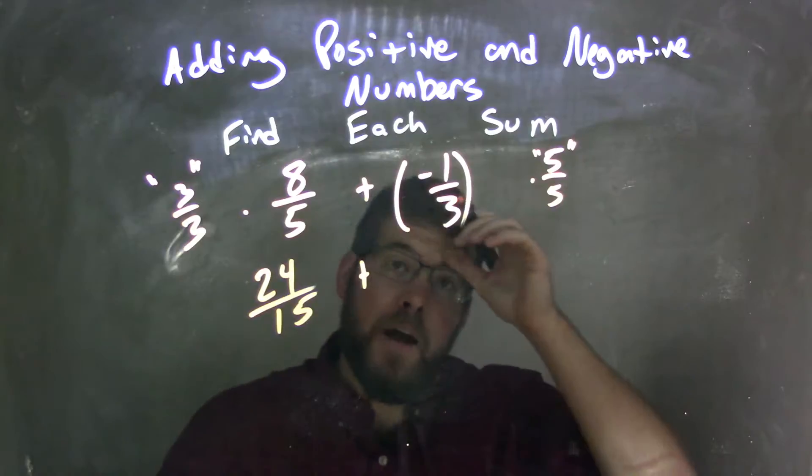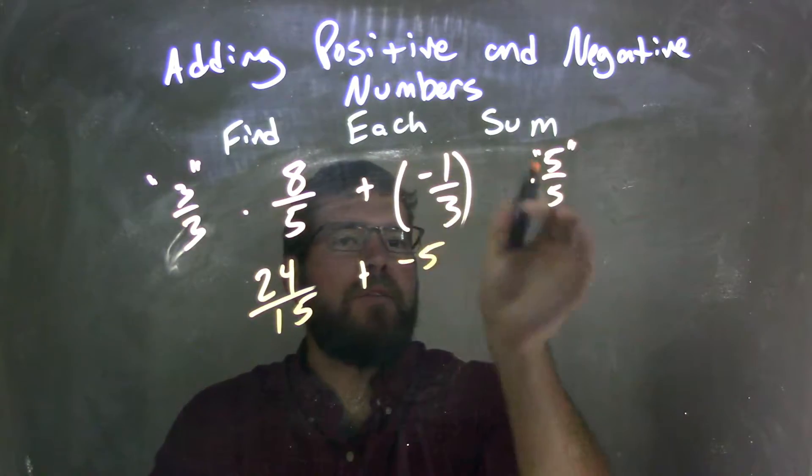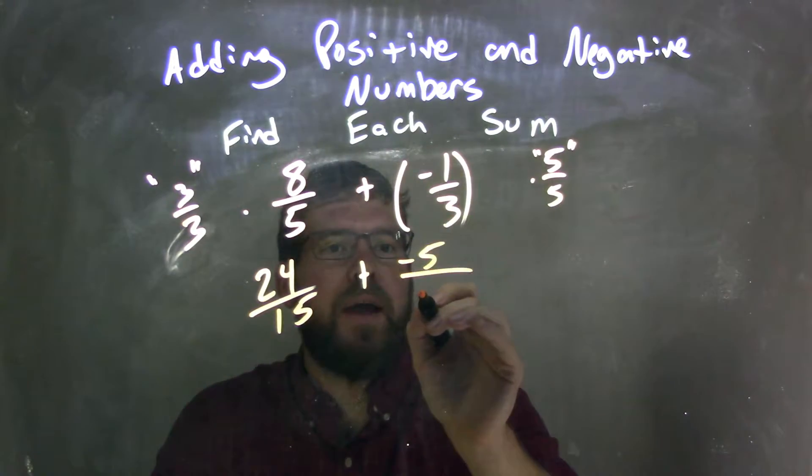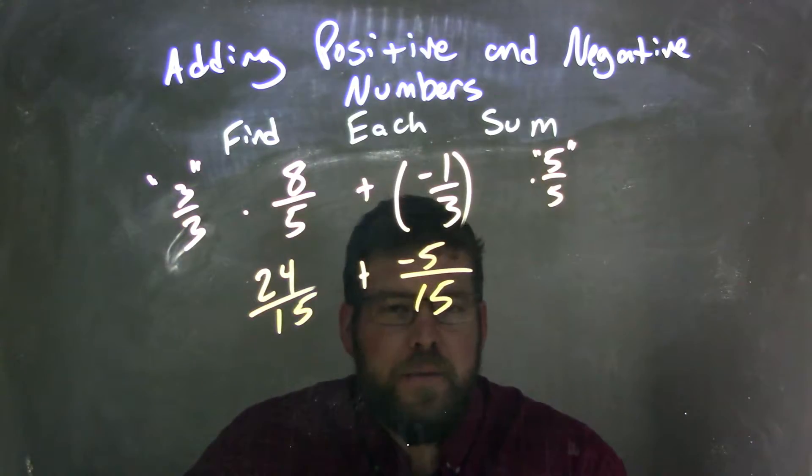Well, negative 1 times 5 is negative 5. Multiply across the numerator and multiply across the denominator, and we have 15. And now, because 3 times 5 is 15, we have the same base.